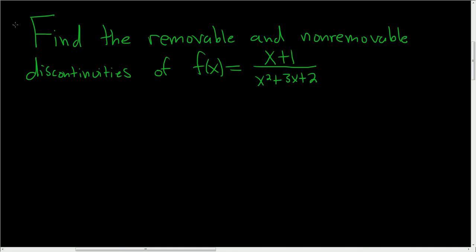Find the removable and non-removable discontinuities of this function. So we have a rational function, and it looks like we can factor it. Let's go ahead and do that.